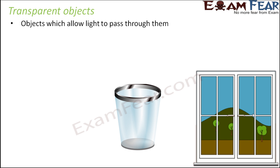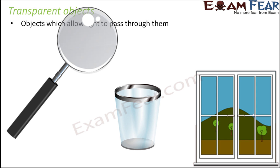Think of a drinking glass — if you see through the glass, you will be able to see whatever is there on the other side. Think of a lens or a magnifying glass: palmists or astrologers use it to read the lines on your hands. When they see through it, they are able to see your hand clearly. So basically these are also transparent objects — objects that allow light to pass through them completely.